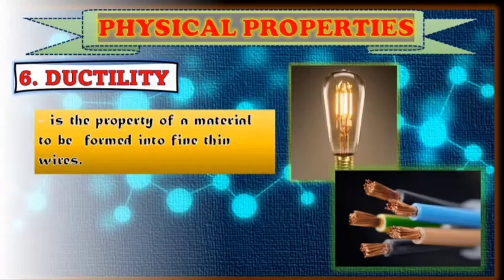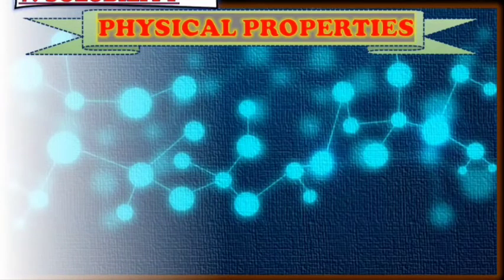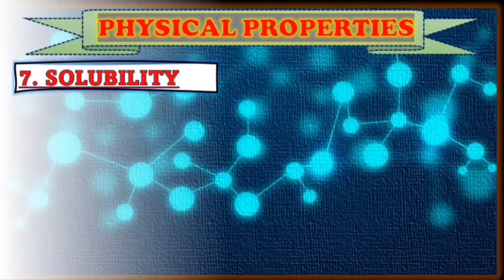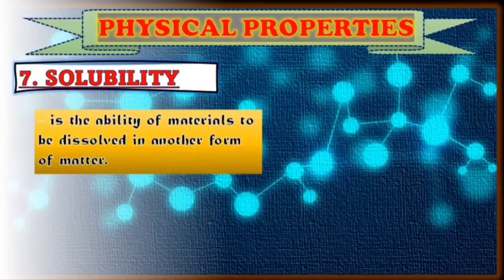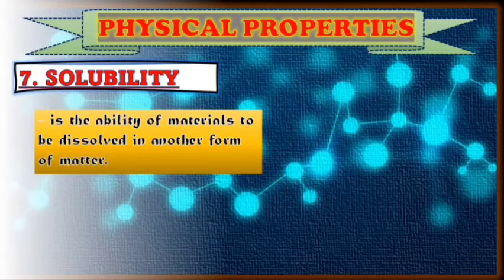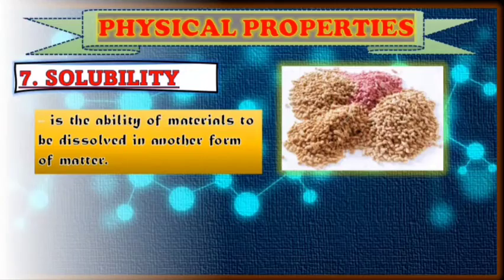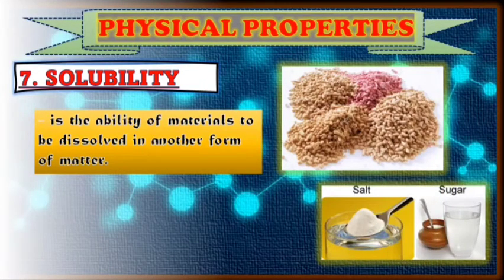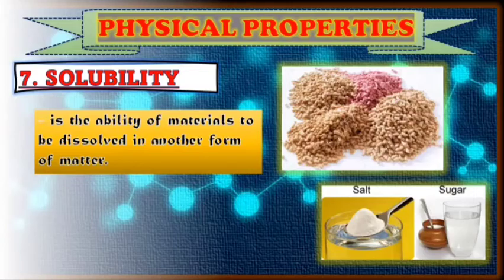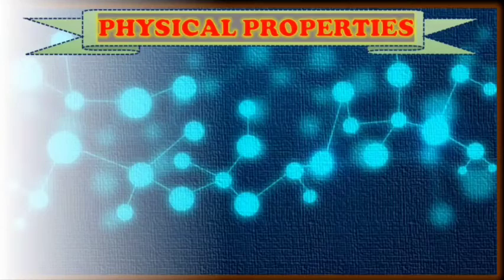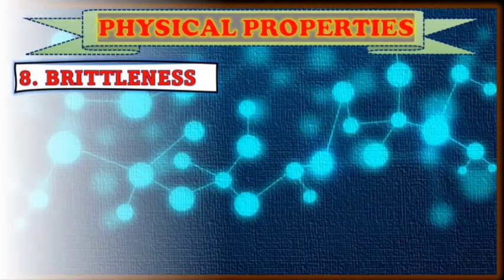Next physical property of material is what you call solubility. Solubility is the ability of a material to be dissolved in another form of matter. Just like fruit granules, milk powder, coffee, and creamer are some solids that can be dissolved in water. By the help of water, the material gets dissolved. Then the next physical property is what you call brittleness.